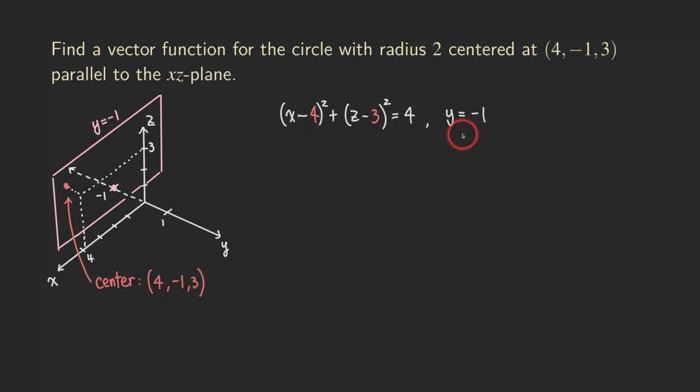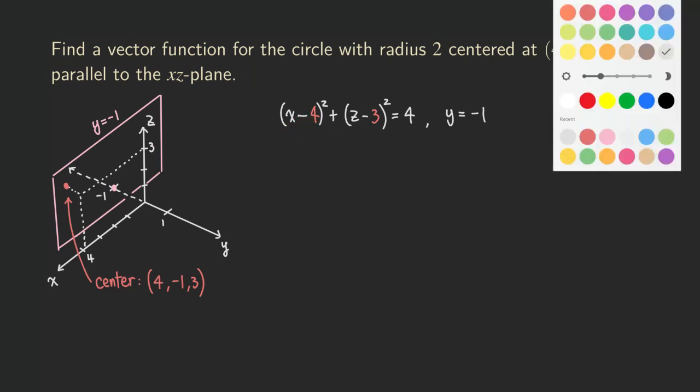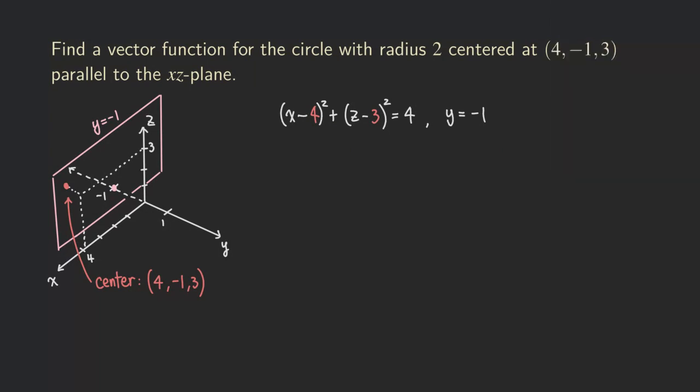Okay, so that's the equation. But we want a vector function. We want the parametrization. So in this case, just like how you come up with the parametric equations for a circle in the parametric plane curves. In this case, we are just going to say that x - 4 is 2 cos t.